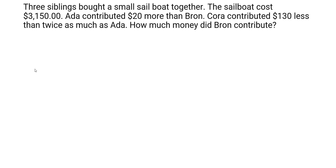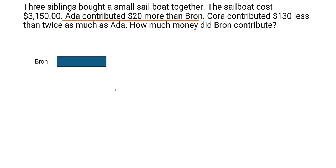Let's take this apart. First, let's look at Ada's contribution. Ada contributed twenty dollars more than Brawn. After 'more than' we know that the name that comes after is our reference — in this case Brawn is our reference. Let's first draw a model for Brawn. This box represents the amount of money contributed by Brawn. Ada would have twenty dollars extra in addition to whatever Brawn contributed. This diagram shows how much Ada has contributed.